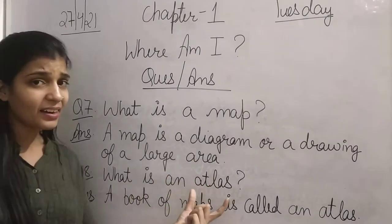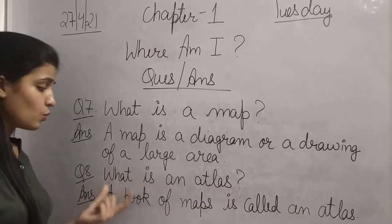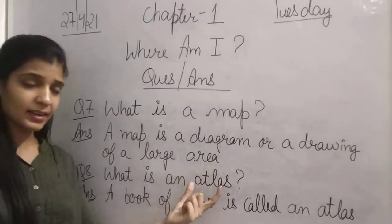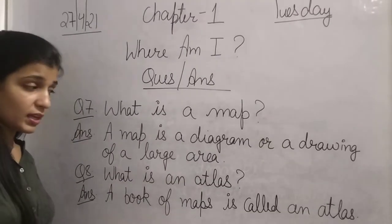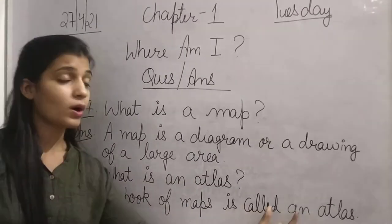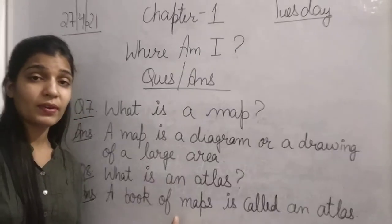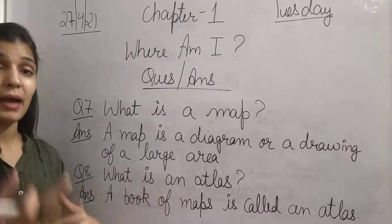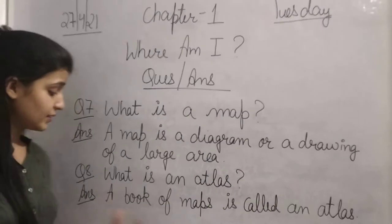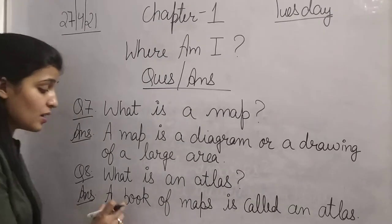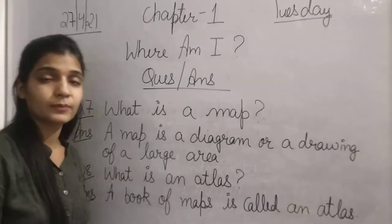The next question is: What is an atlas? A book of maps is called an atlas. Jo map ki book hoti hai, jisme alag-alag maps hote hain, use atlas kehte hain. A book of maps is called an atlas.